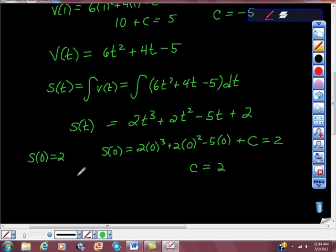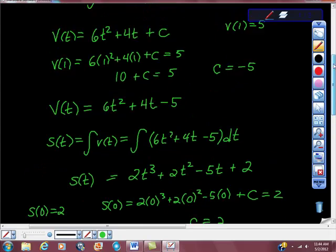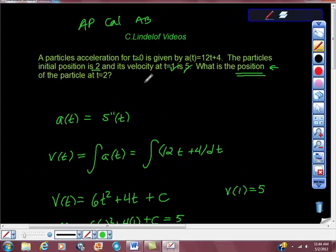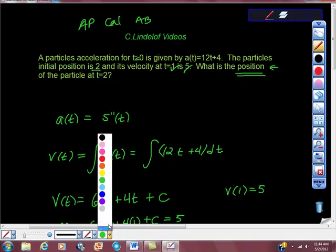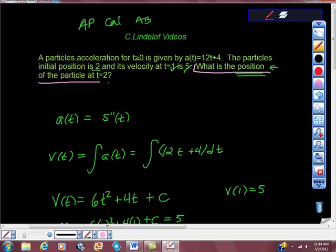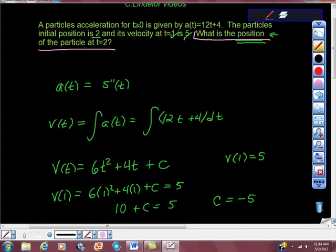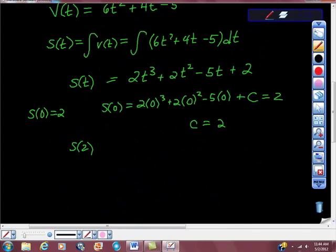And now I'm going to evaluate s(2). Because that's, remember, got to keep in mind that we have to be going towards our question. The question is, what is the position? Make sure that when we finish that we answer the question. What is the position of the particle at t equals 2? So we finally have our position function. So we have 2 times 2 cubed plus 2 times 2 squared minus 5 times 2 plus the 2.